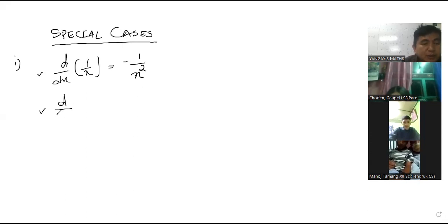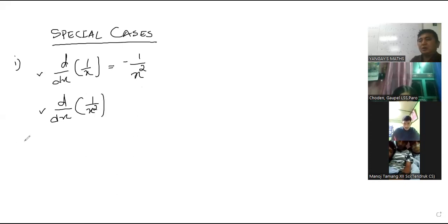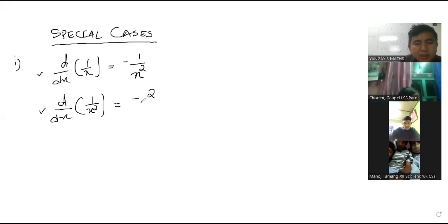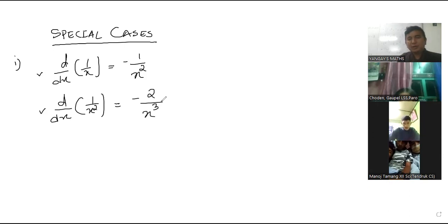If you want to differentiate one by x squared, the answer here is negative two divided by x cube. Are you getting some pattern here?